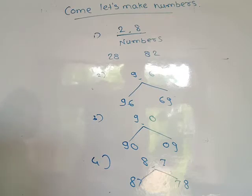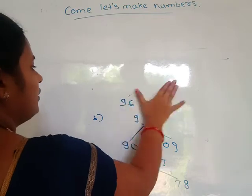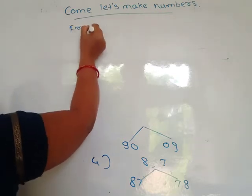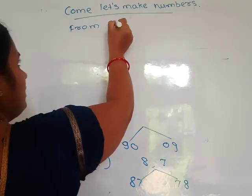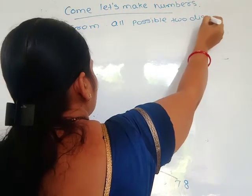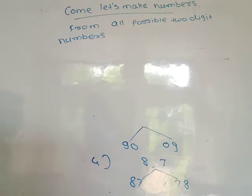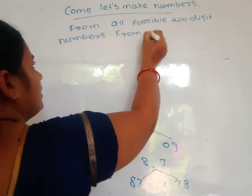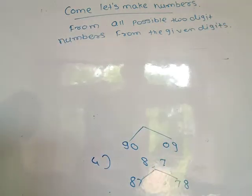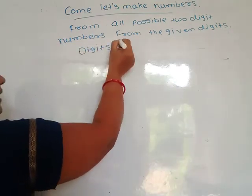Now I am giving some more examples and you will complete the rest in homework. Write this classwork in your notebook. The question is: form all possible two-digit numbers from the given digits. Make two columns — in one column write the digits, and in the second column write the numbers.